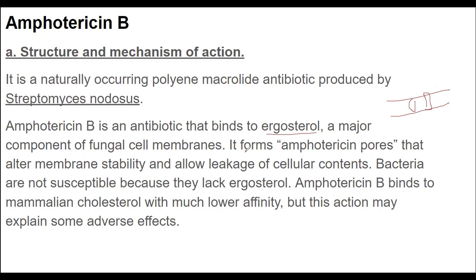Amphotericin B forms pores - called amphotericin pores - that alter membrane stability and allow leakage of intracellular contents. What happens is: amphotericin B binds to the ergosterol component and opens it up, forming a pore. As soon as the pore is formed, the intracellular contents start to leak out. Bacteria are non-susceptible because they lack ergosterol.